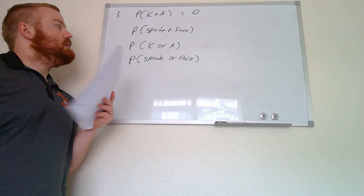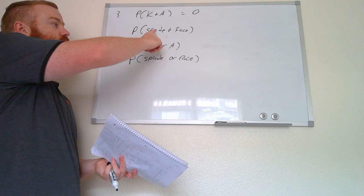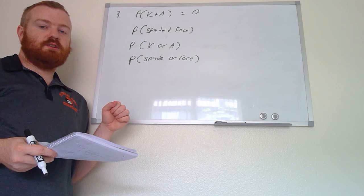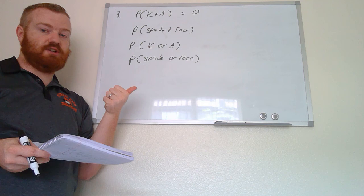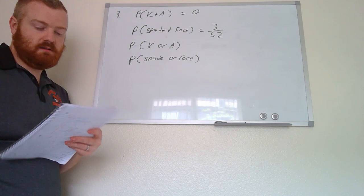For the probability of a spade and a face card: spades are one of the four suits in a 52-card deck, so there are 13 spades. The face cards are jack, queen, and king. For both conditions to be satisfied simultaneously, we need the jack of spades, queen of spades, or king of spades — so there are 3 favorable outcomes out of 52 total. You can leave it as 3/52 or divide in the calculator to get the percentage.